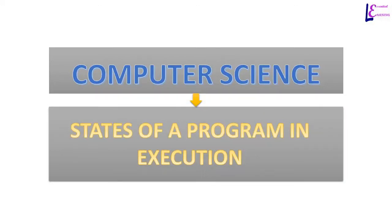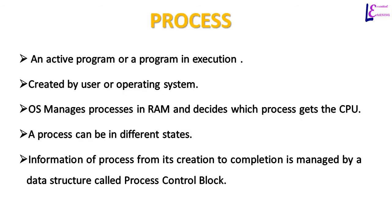Along with managing memory, an operating system has to decide which instruction in memory or which program should be next to use the CPU. The ability of an operating system to manage which instructions or programs to execute is called process management. A process is a general name for an active program, a program in execution, or a set of instructions in execution. It may be created by a user or the operating system, which is responsible for management of processes from creation to termination.